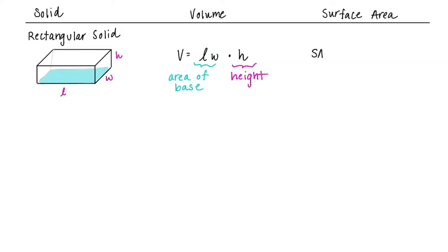For surface area, we look at the sides of the box. You have a top and a bottom, both with area length times width — so two sides with area L×W. Then the left and right sides are W×H — two sides with area W×H. Finally, the front and back are length times height — two sides with area L×H. That's one formula you do want to know.